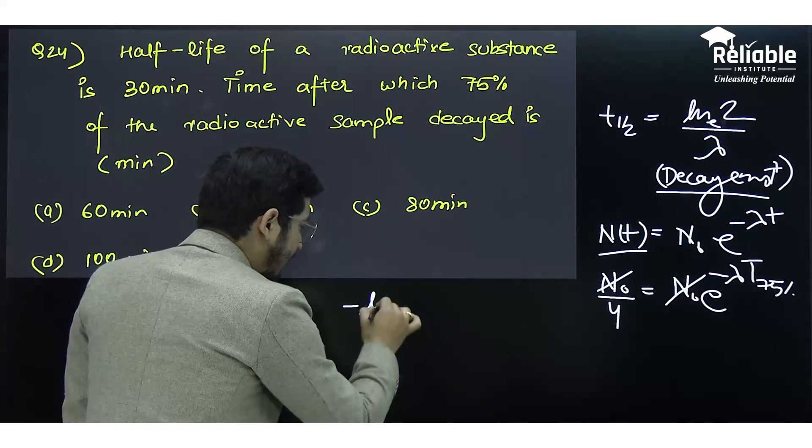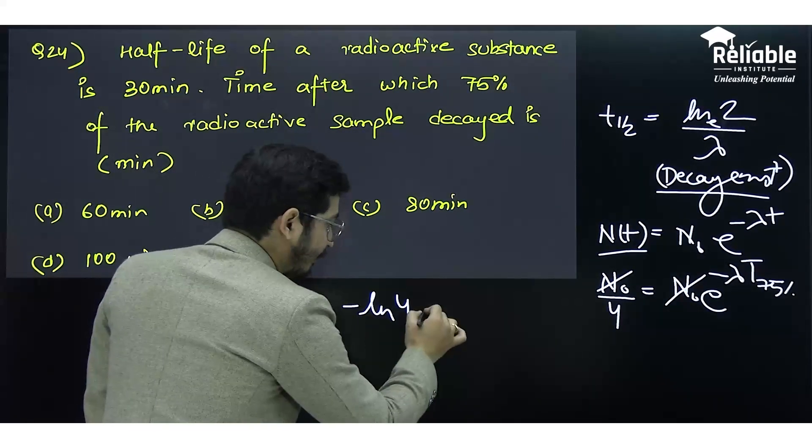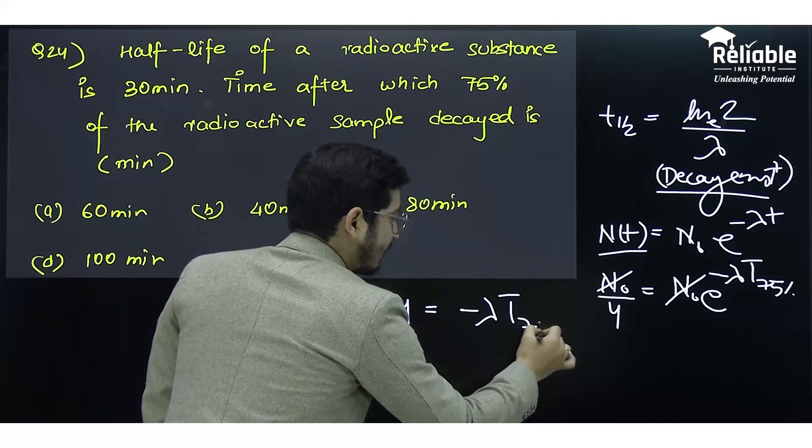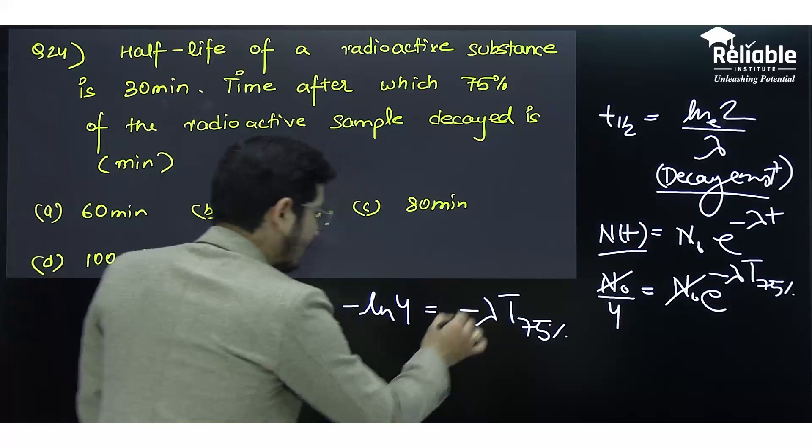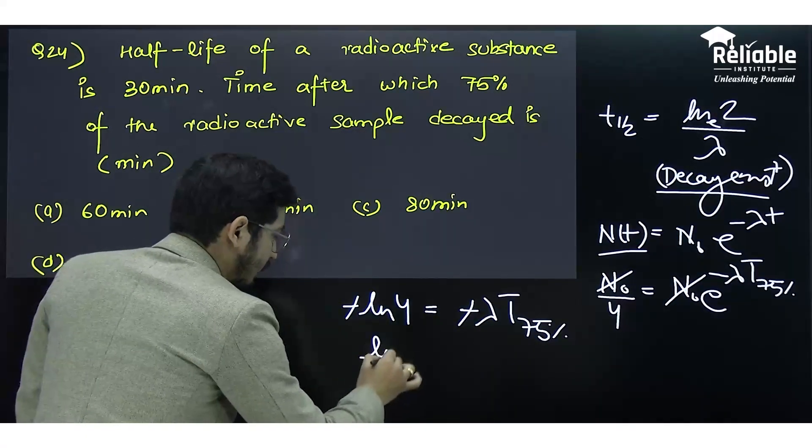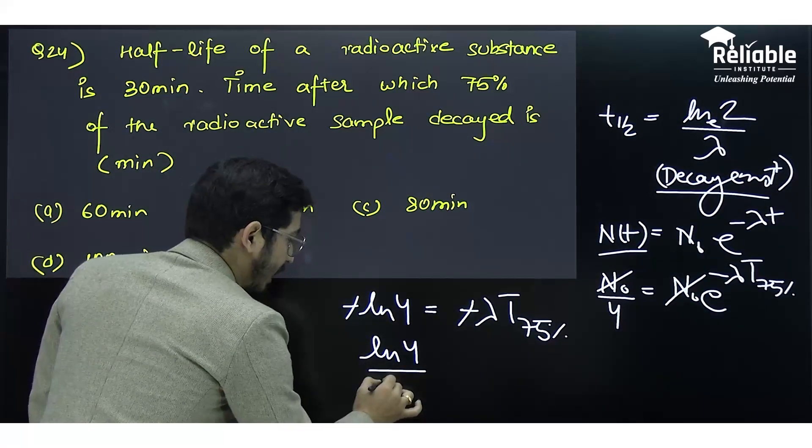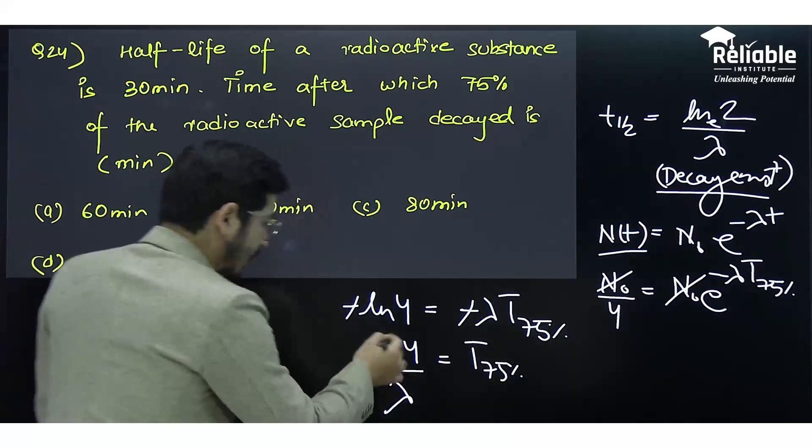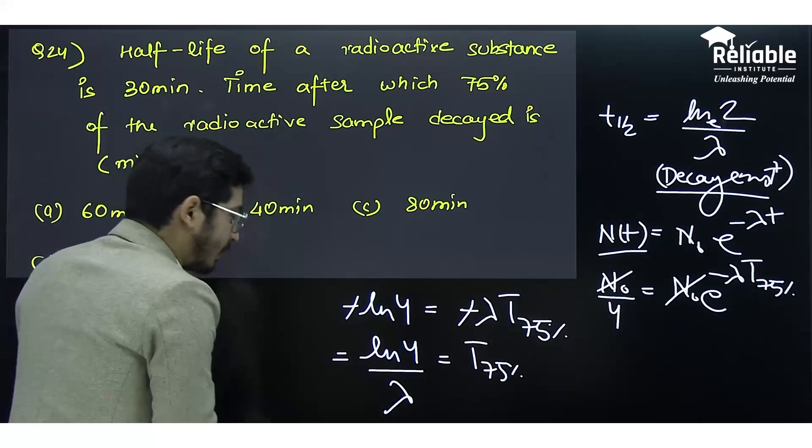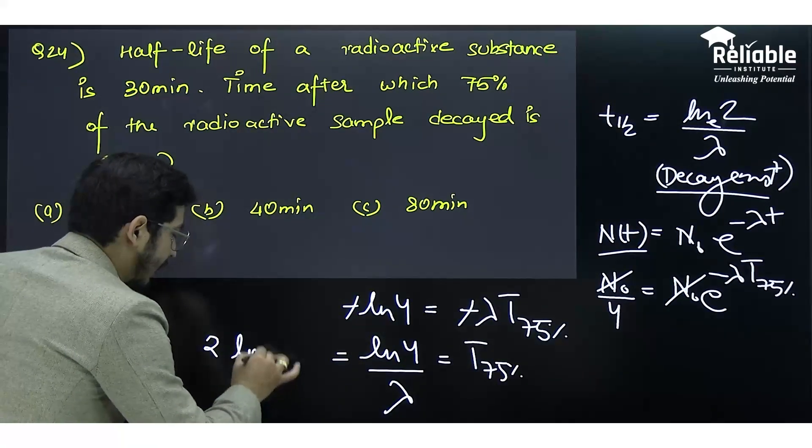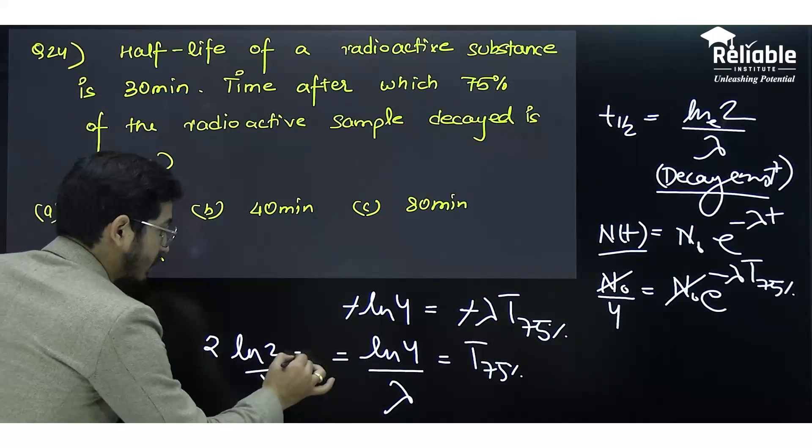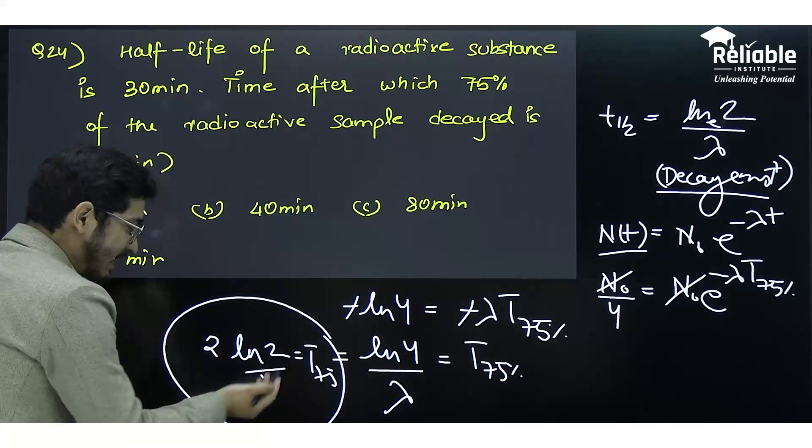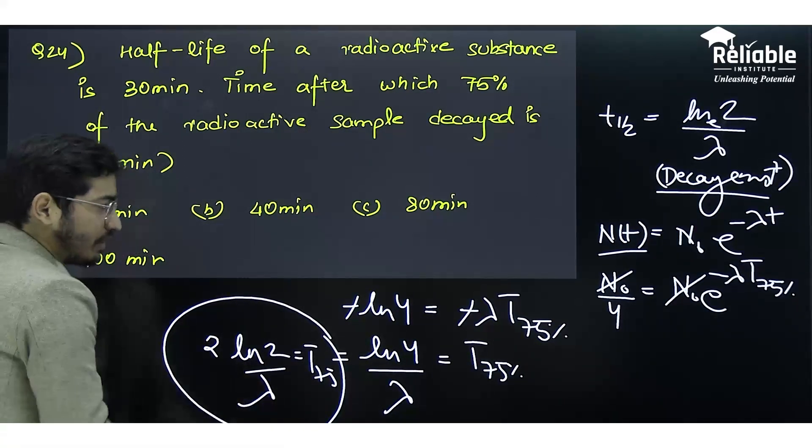N₀ cancels out. Taking log on both sides: ln(4) = λt_75%. So t_75% = ln(4)/λ. By applying log properties, we write it as 2ln(2)/λ = t_75%. This is easily understandable as twice the half-life.